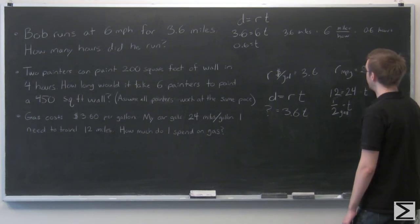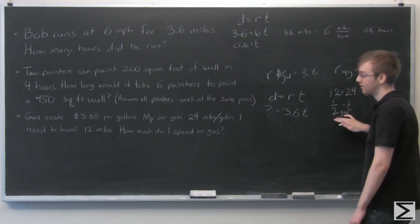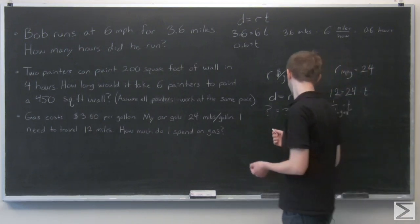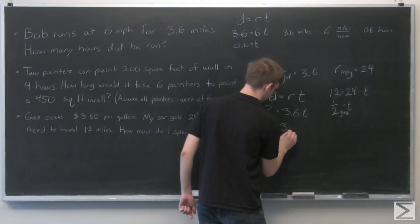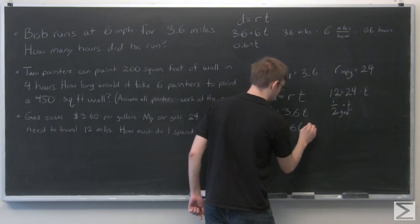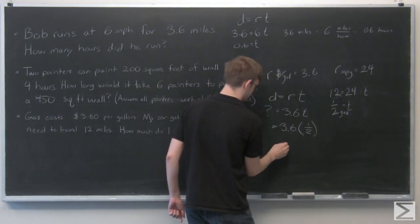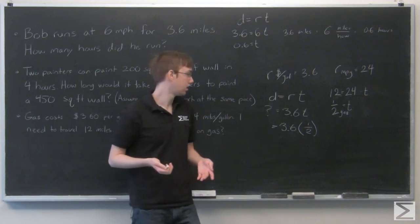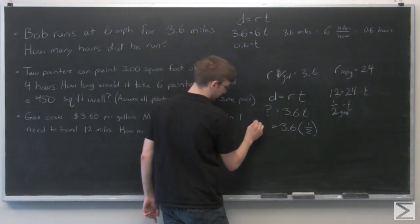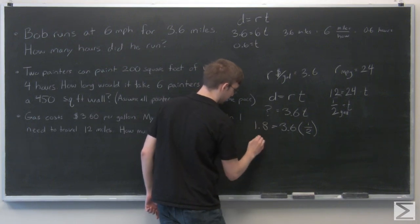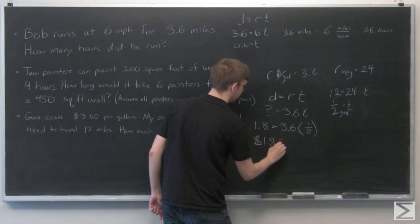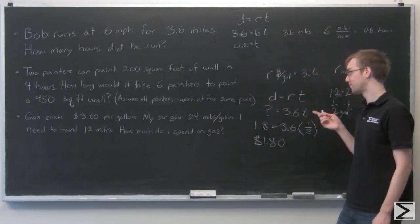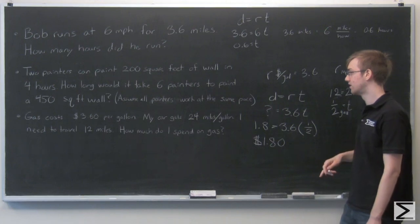So to go 12 miles with 24 miles per gallon is going to take half a gallon. Now we know that we need half a gallon. All we have to do is plug that into this equation to find out how much half a gallon is going to cost us. So 3.6 times one half, that's like 36, and half of 36 is 18. Remember the decimal point, so that's going to be 1.8, or in dollars, $1.80. So our final answer to this example is we need to spend $1.80 on gas in order for us to go 12 miles.